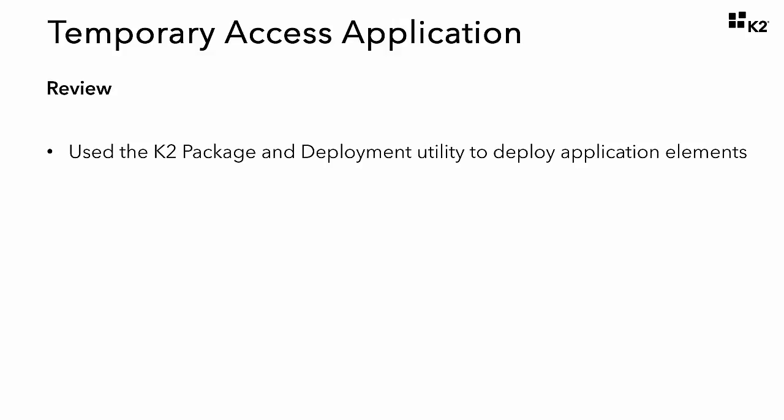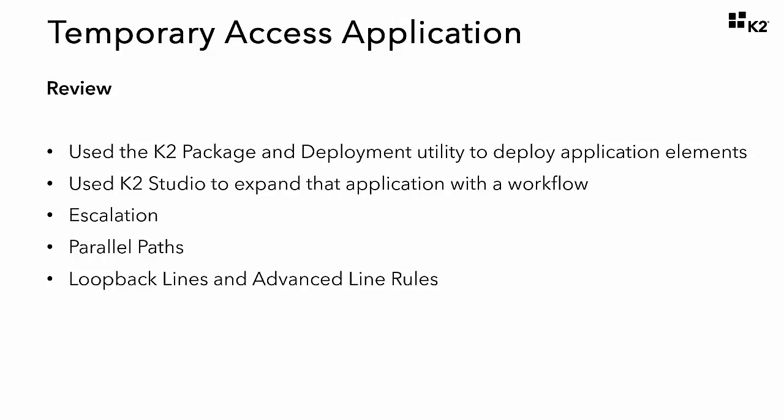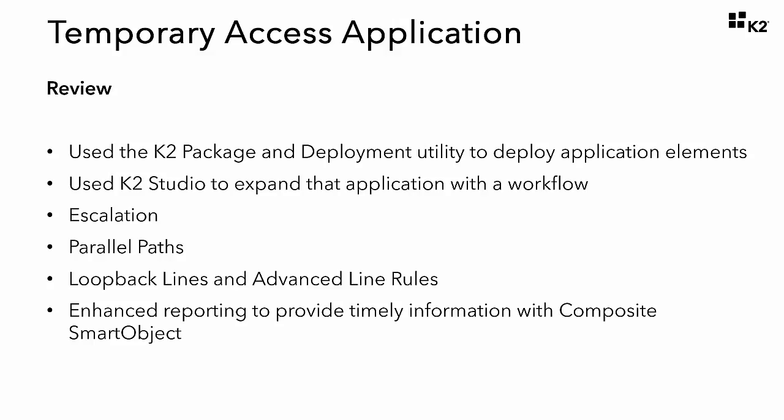By running through this tutorial, we were able to get our hands dirty with the K2 package and deployment utility to deploy K2 application elements across different environments. We used K2 Studio to expand the application with a workflow and wired that workflow into an existing Smart Form. The design of that workflow added some more complex capabilities like escalation, parallel paths, loopback lines, and advanced line rules to handle multiple outcomes based on user actions and data entered into a form. By tying data from the application directly to K2 workflow historical data, we were able to enhance the application's reporting mechanism to provide timely information for security purposes and management review. We hope you've enjoyed working through this tutorial as it was meant to give you a better understanding of the tools involved with building out a K2 application using K2 Studio. We'll see you in the next video.